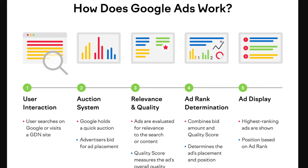So if we take a look at my screen over here, this is a good representation of all of the different steps involved in creating a Google ad. The first step is that a user searches for a particular keyword on Google. Once they do that, Google will hold a quick auction for that keyword amongst all of the advertisers bidding for it. Then Google will give a quality score and assess its relevancy. Based on the relevancy and quality score, it will give you an ad rank, combining the bid amount and quality score to rank the highest quality ads, which are shown at the top and usually get the most clicks.